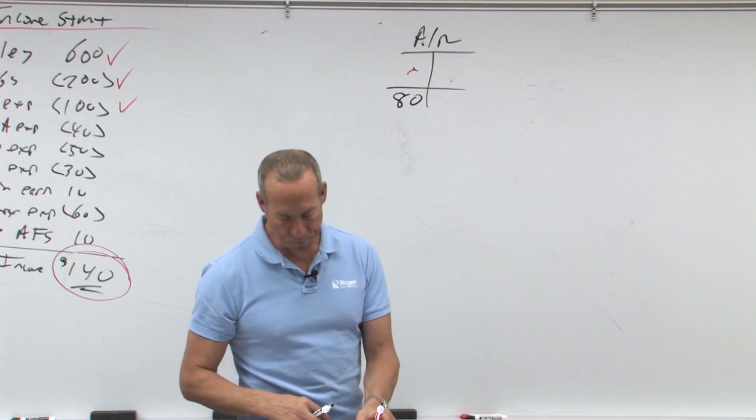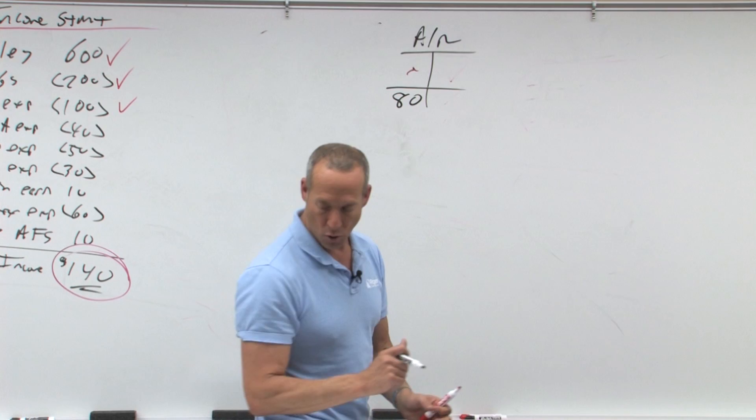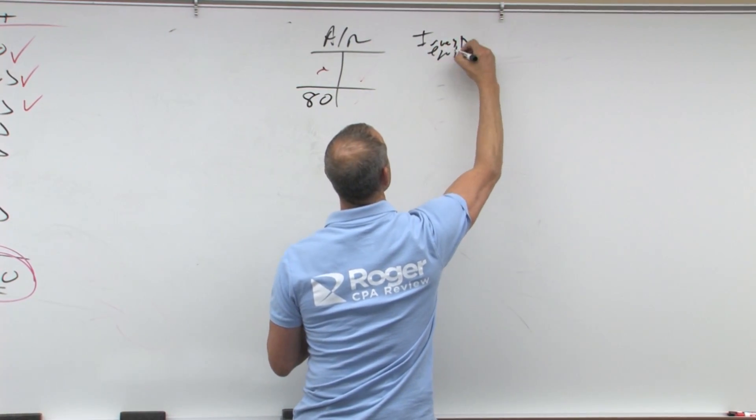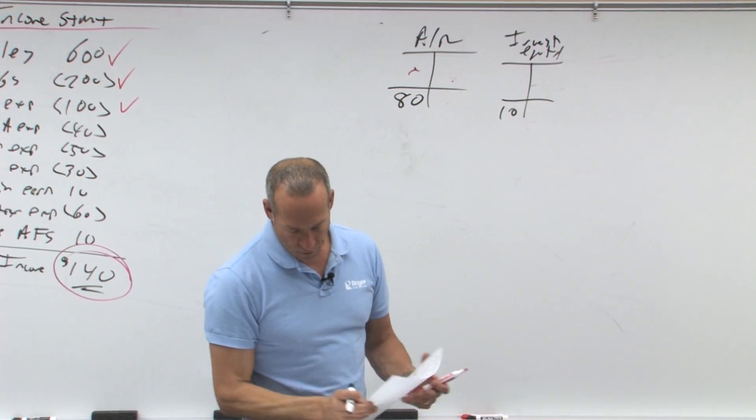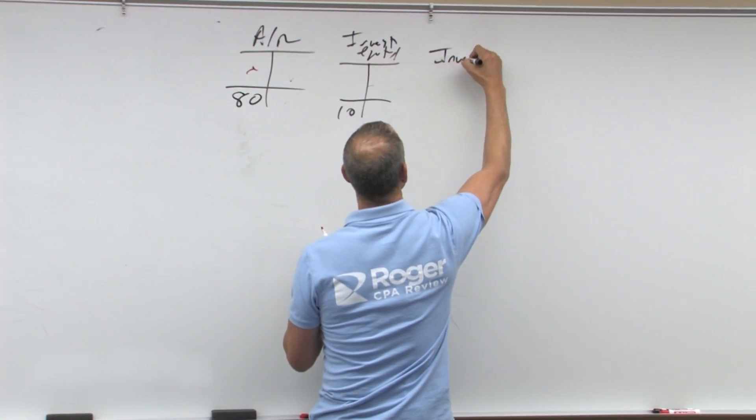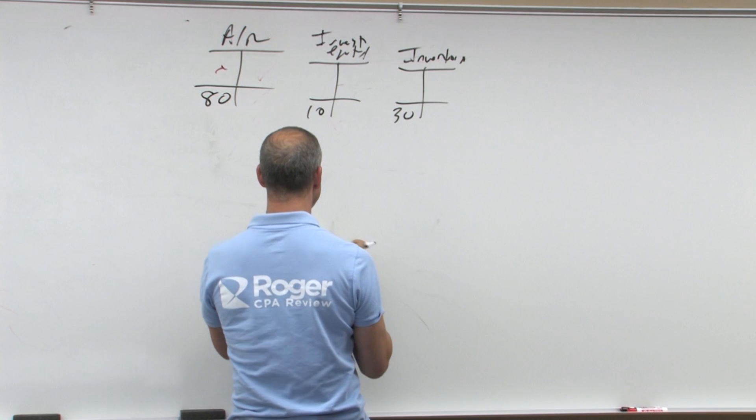We have increase in investment under equity method. So that would be your investment under the equity method. So that would go up by 10. We've got an increase in inventory of 30. So we have inventory 30. And again, this isn't the balance, it's the change.